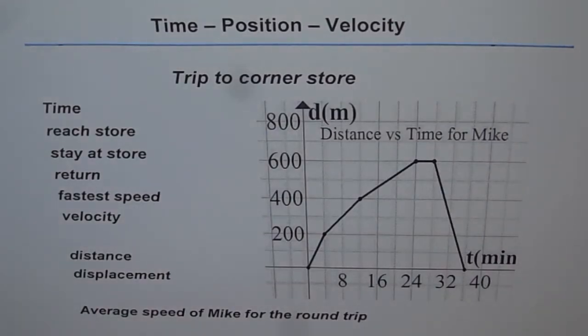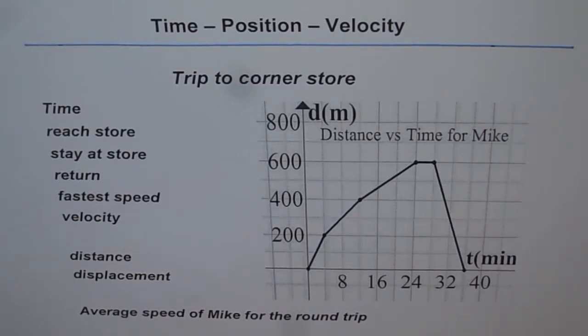Time, Position, Velocity. Trip to corner store. In this graph we are trying to develop from the previous video. Half of the graph is similar to what you saw in the previous video. We will develop on the concepts we have already learned and learn a few new things now.